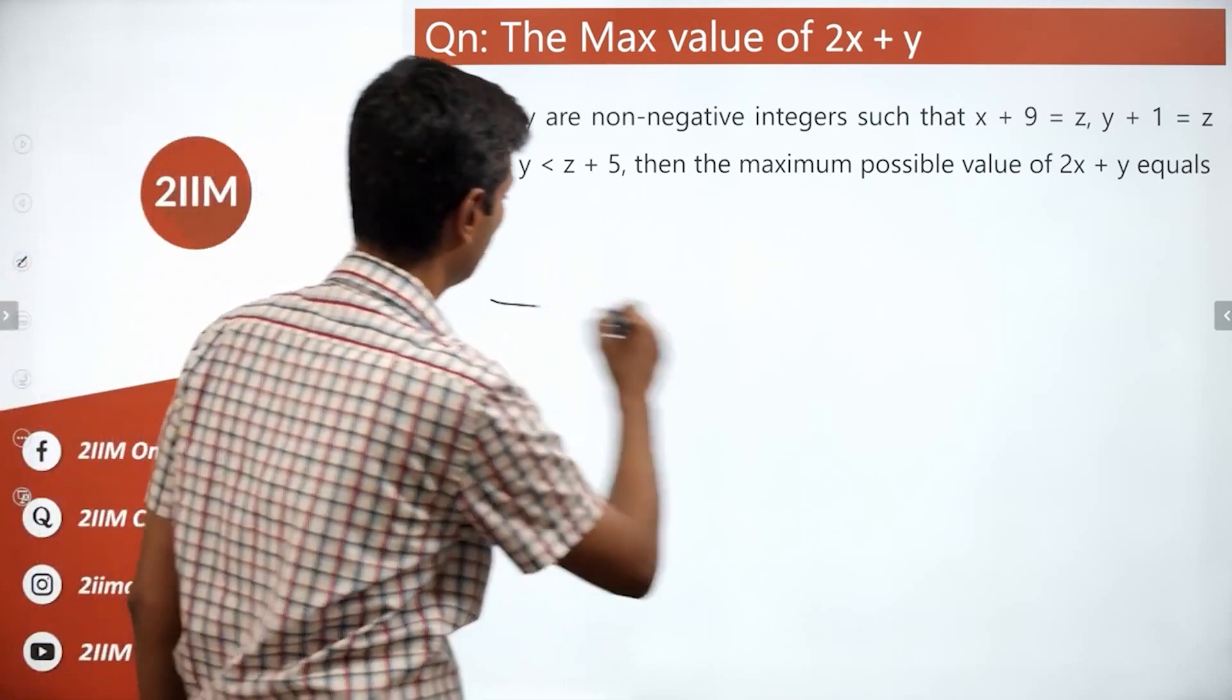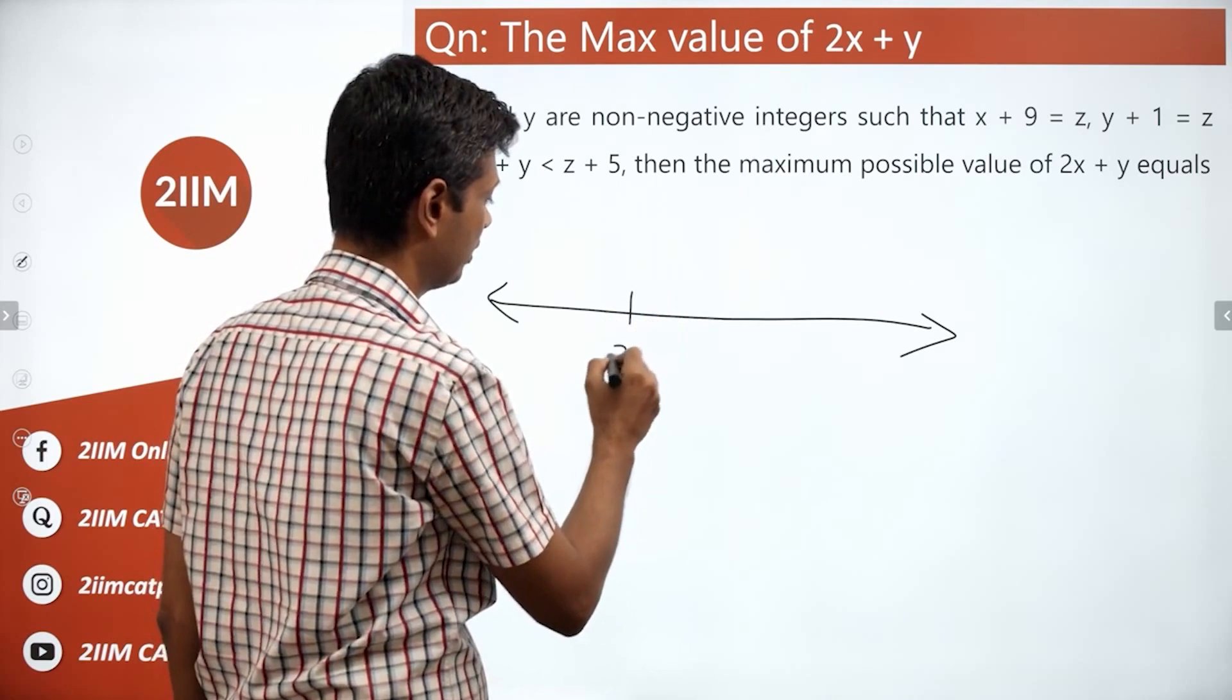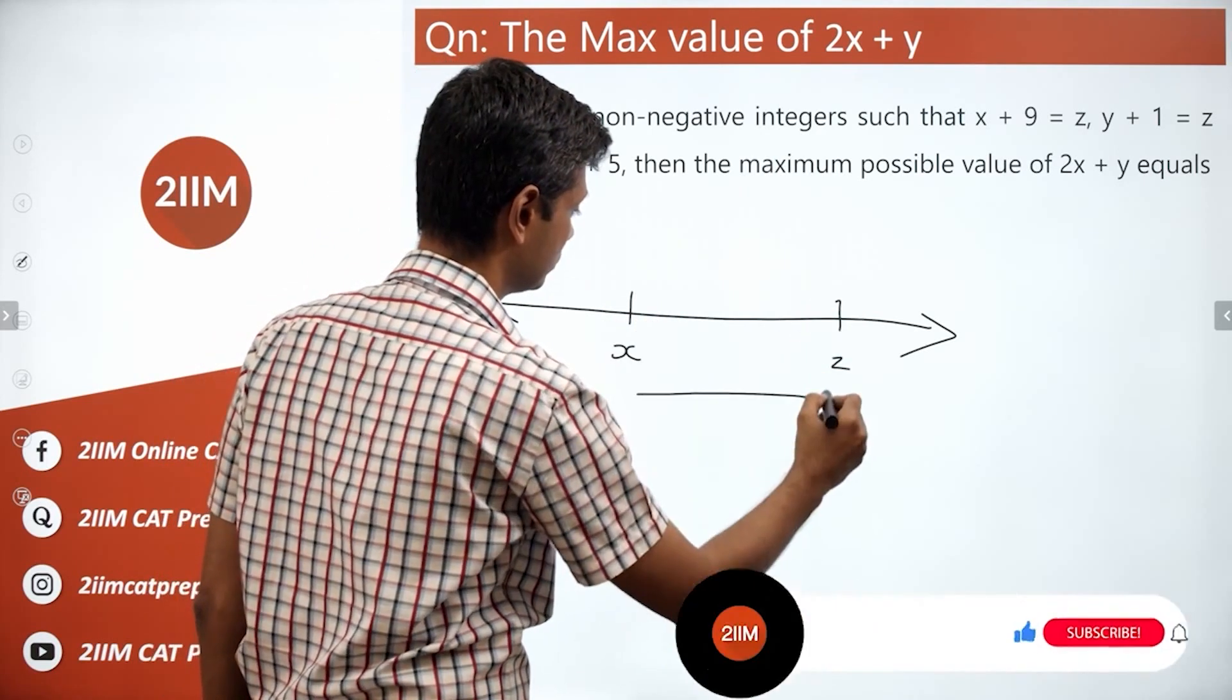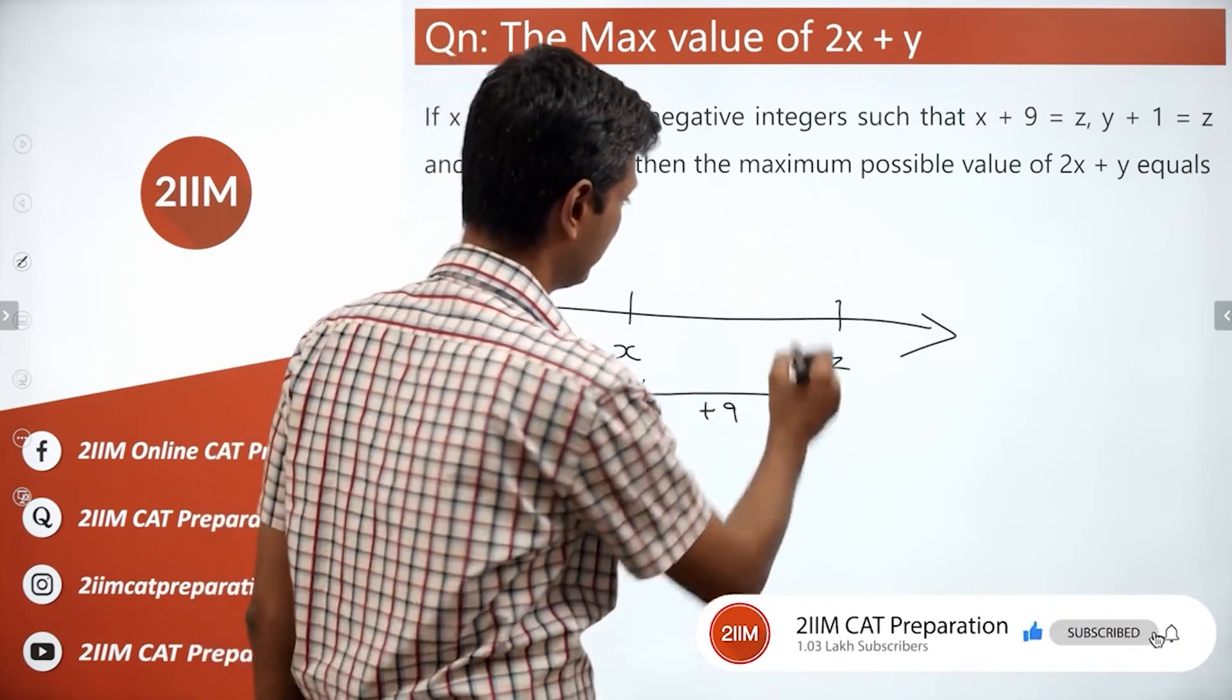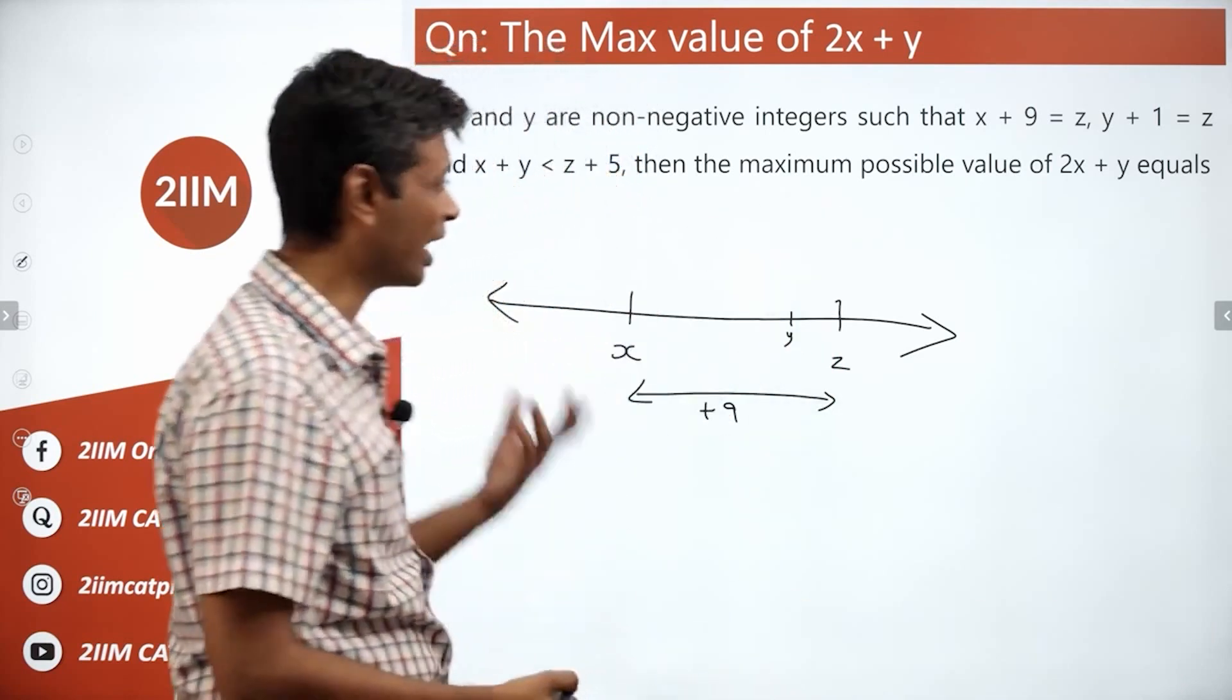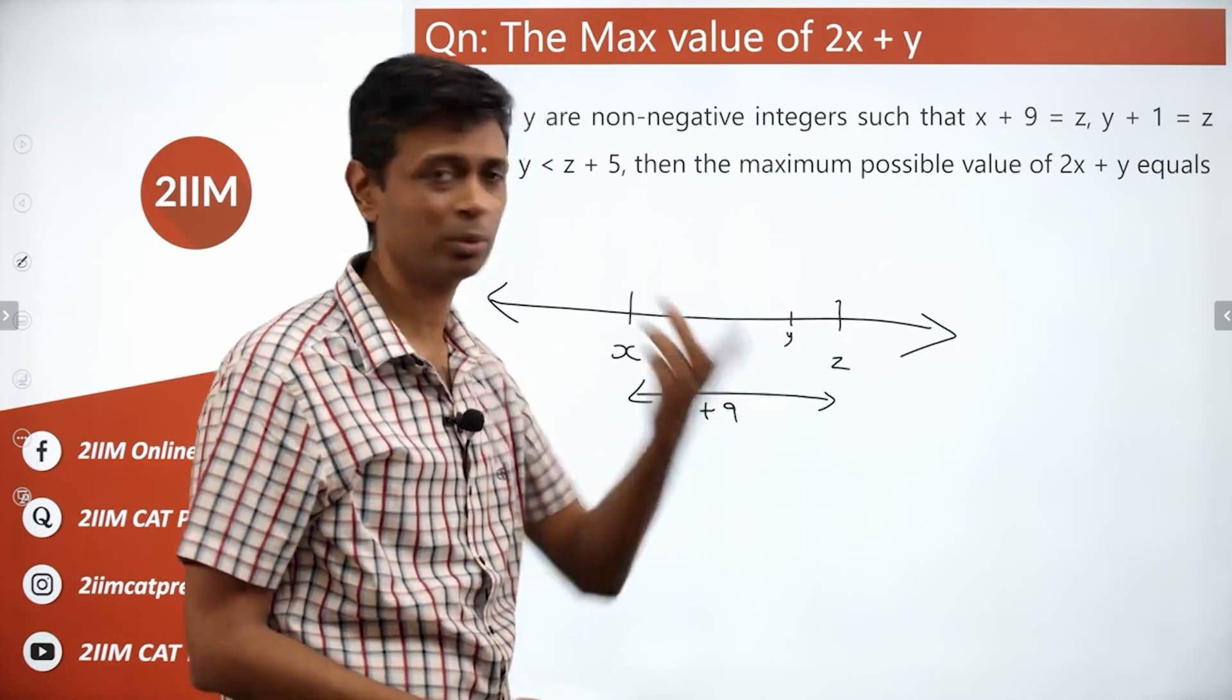To start with, I like the idea of drawing a number line. You can plot everything there. There is x, x plus 9 is z, this is plus 9, y plus 1 is z, so y is here. All three are linked. When I started doing this, I realized I don't even need to draw the number line because all three can be captured with the same variable.